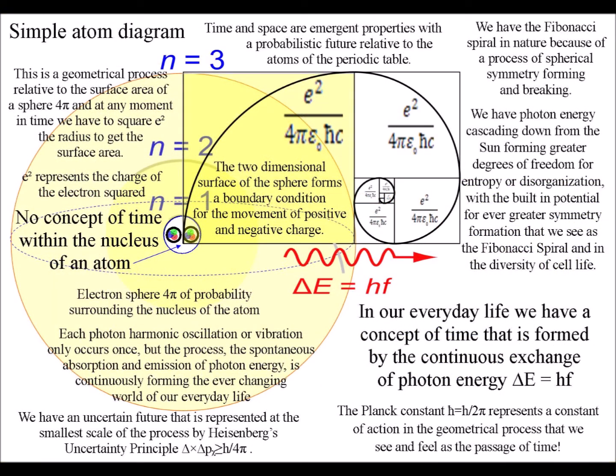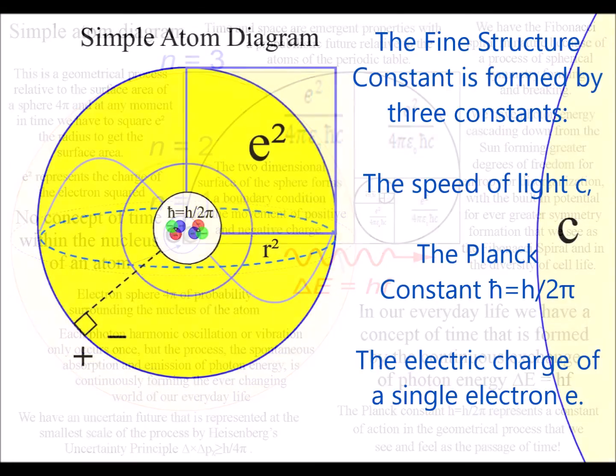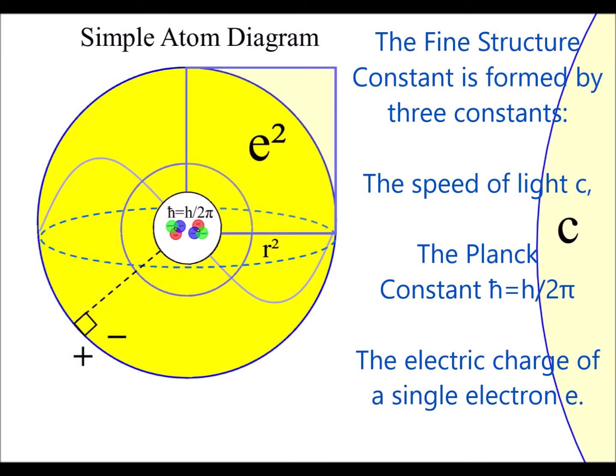When this exchange of energy happens, it forms a fine-structure constant, or coupling constant. No one knows why we have this constant. It is formed by three constants: the speed of light c, the Planck constant h, and the electric charge of a single electron e.